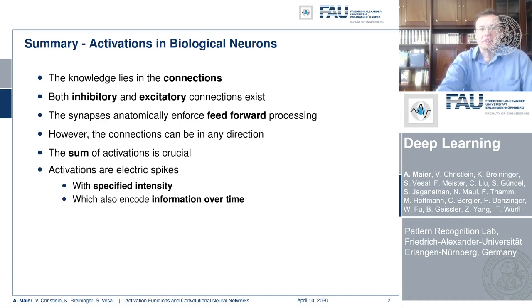The synapses anatomically enforce feed-forward processing, which is very similar to what we've seen so far. However, those connections can be in any direction, so they can also form cycles, and you have entire networks of neurons connected with different axons to form different cognitive functions. Crucial is the sum of activations — only if the sum of activations is above the threshold will you actually get an activation. The whole system is also time-dependent and encodes information over time, running at a certain frequency.